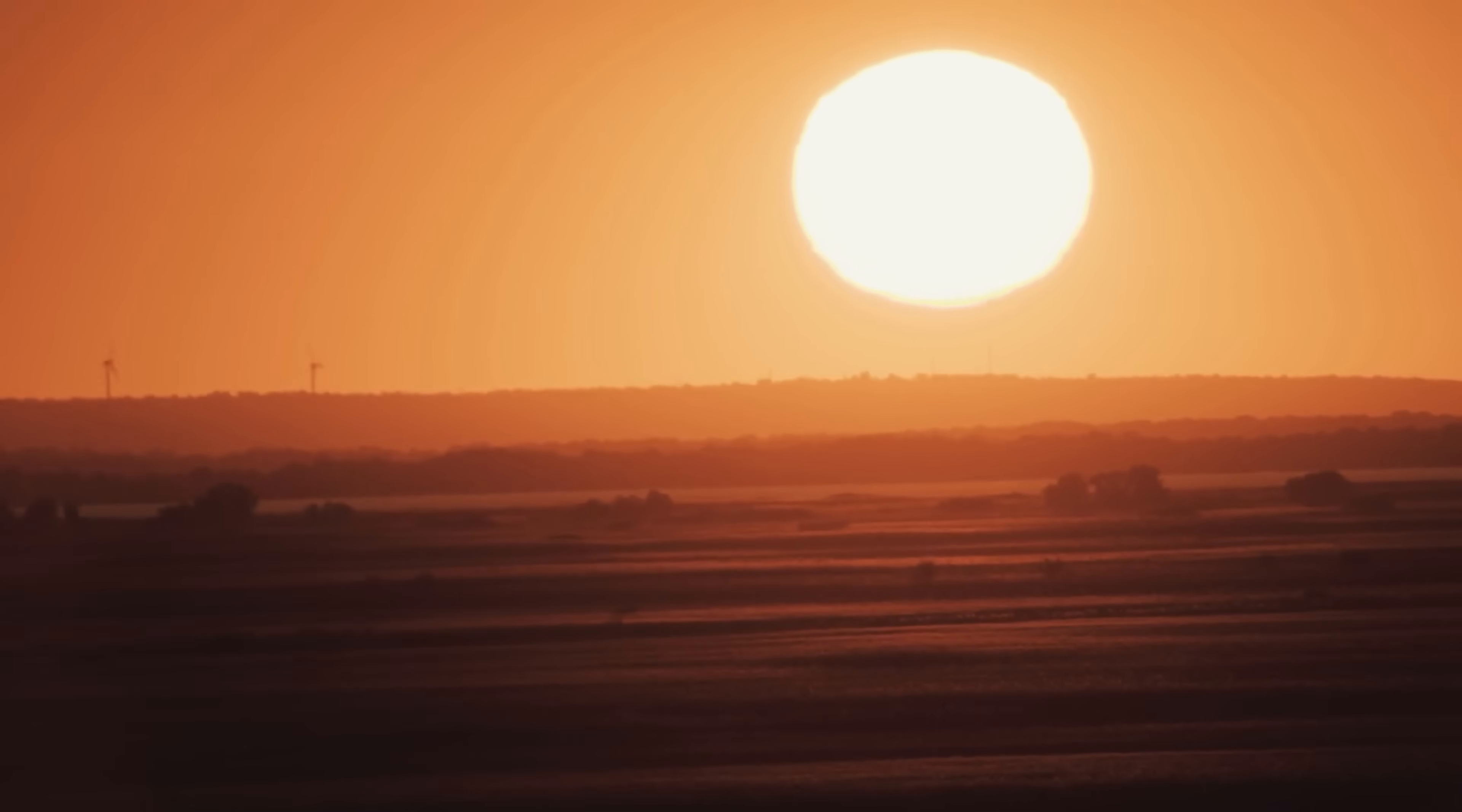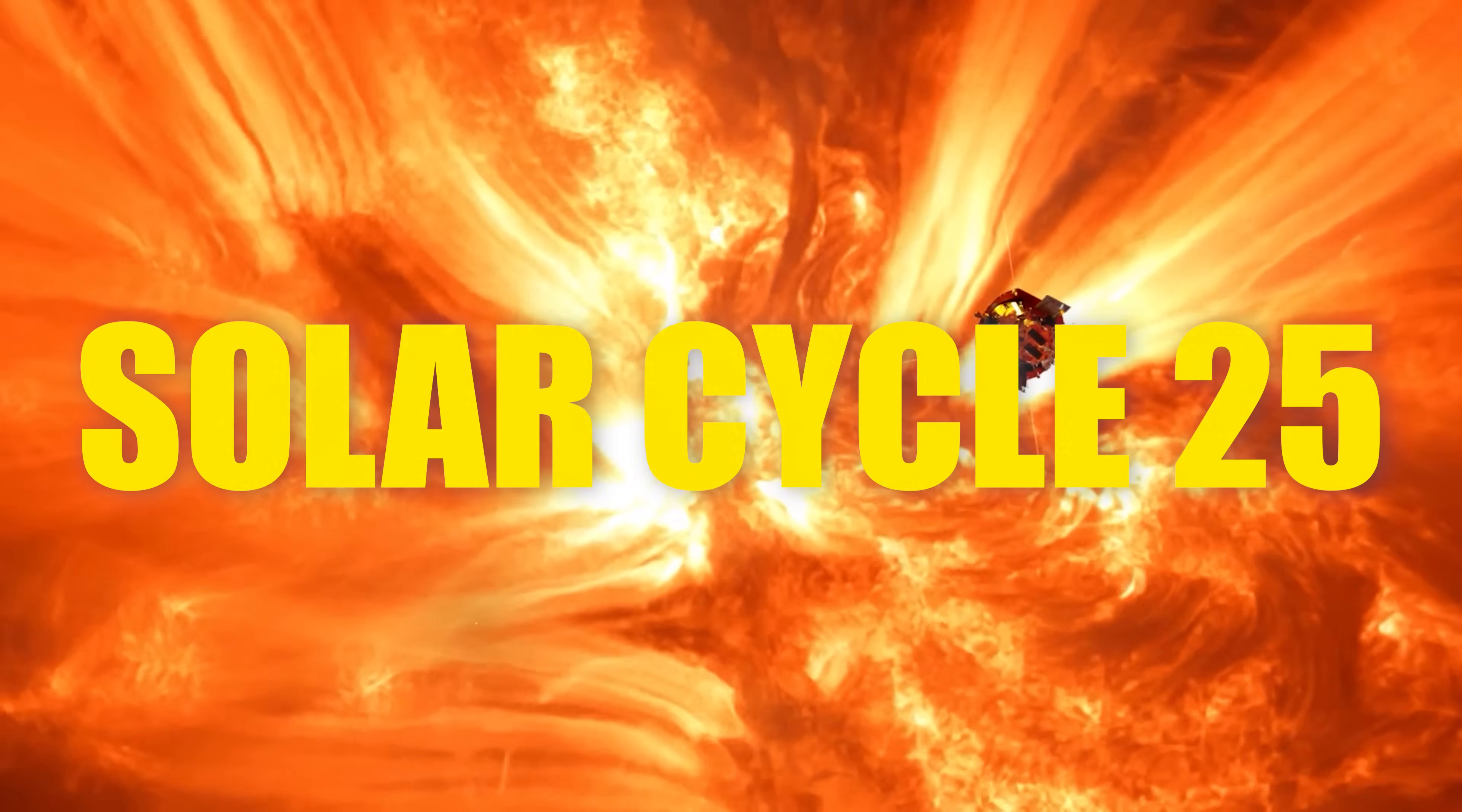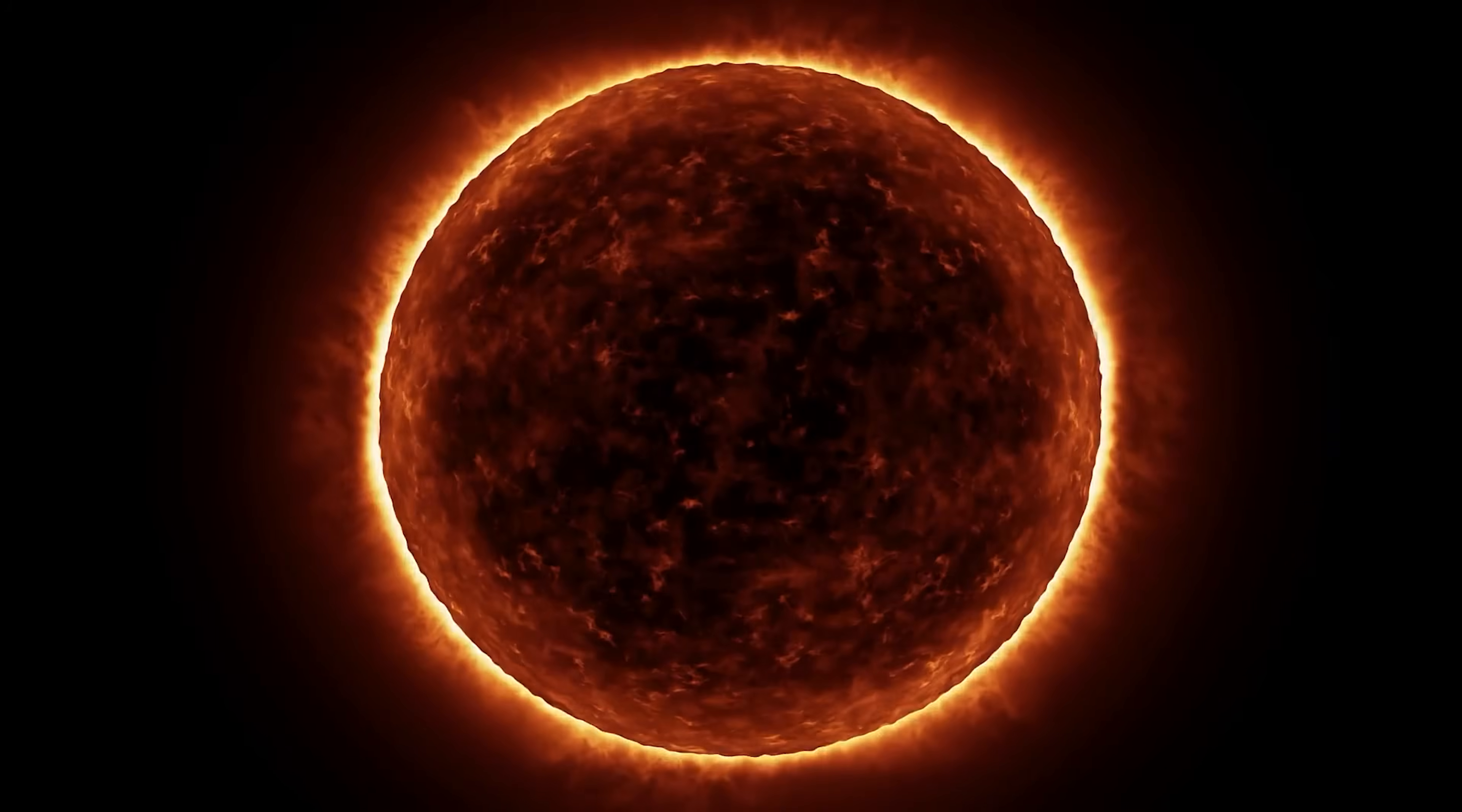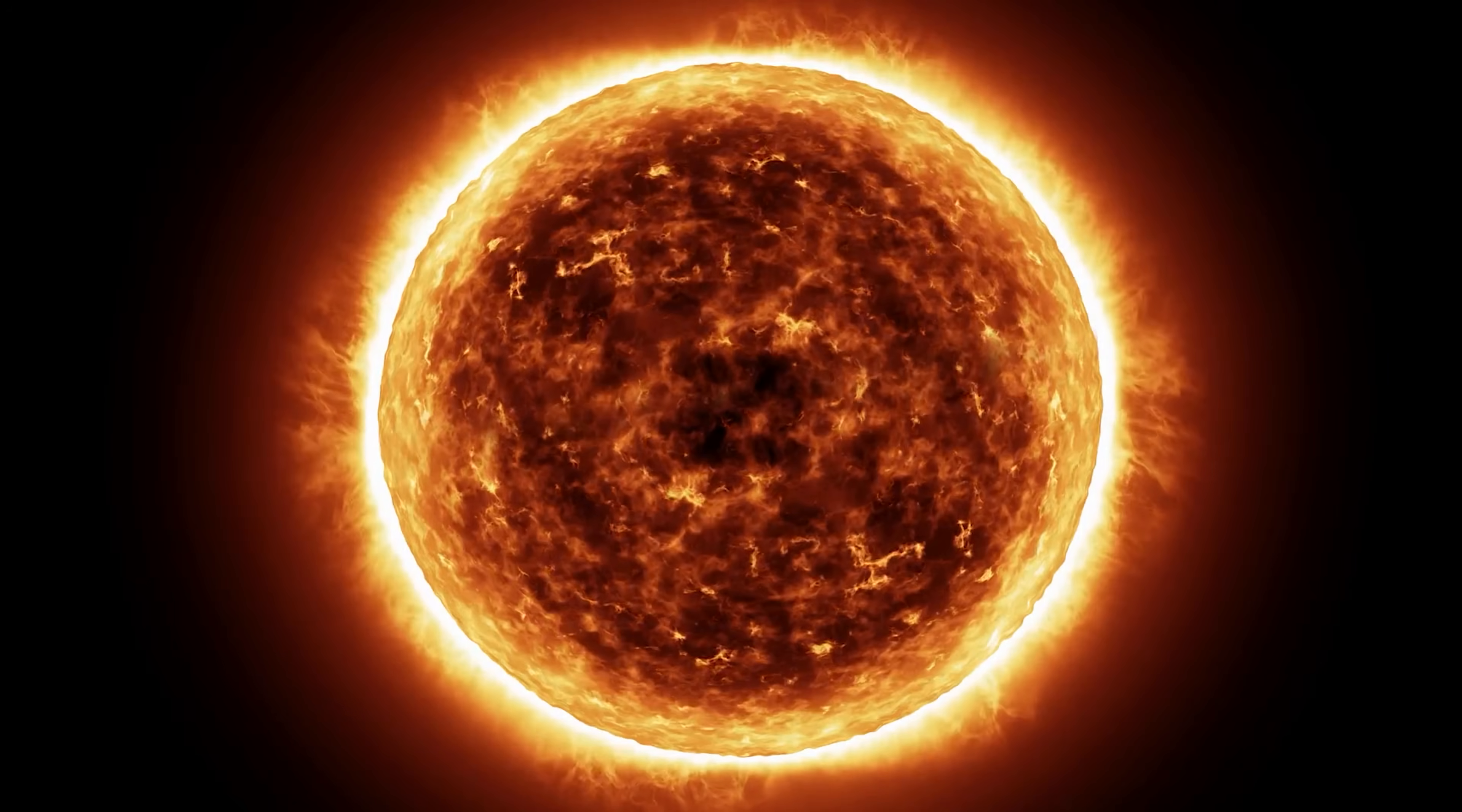We have recorded 25 Sun cycles so far, dating all the way back to 1755 with solar cycle 1, and right now we are in solar cycle 25. Scientists can tell you all about the mechanisms of what creates this process and why it happens the way that it does, but we still don't have an answer for why it happens every 11 years specifically.